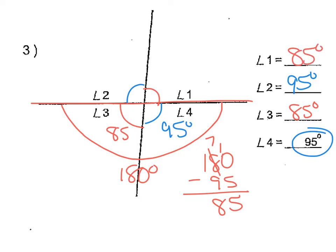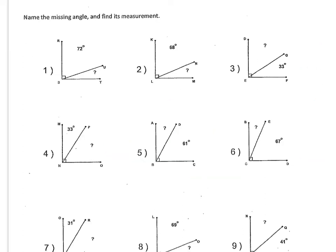Those are some examples of how to find missing angles when given one angle in a diagram like this. In this next section, they are asking us to name the missing angle and find its measure.